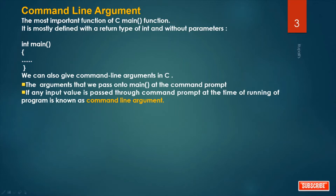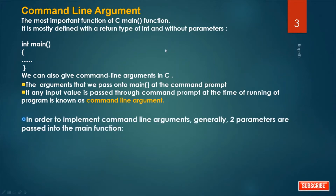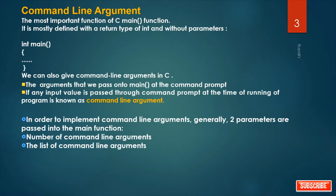We pass arguments to main from the command prompt at the time of running. That input value is called a command line argument. In order to implement command line arguments, generally two parameters are passed into the main function: first, how many number of command line arguments are there, and second, the list of command line arguments.